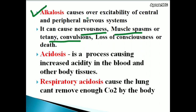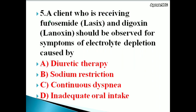Alkalosis can cause nervousness, muscle spasm or tetany, convulsions, and loss of consciousness or death. Acidosis is a process causing increased acidity in the blood and other body tissues. Respiratory acidosis occurs when the lungs can't remove enough carbon dioxide from the body.